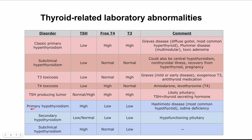In primary hypothyroidism, there's a reason that T4 and T3 cannot be increased. The most common reason is autoimmune — in the United States, Hashimoto's disease is the most common cause. In other countries, iodine deficiency may be the cause, since iodine is needed to make thyroid hormones. Remember, TSH is high because the body is trying to compensate and increase T4 and T3 levels.